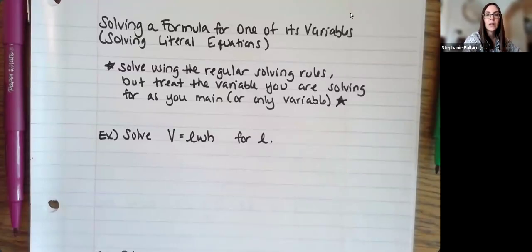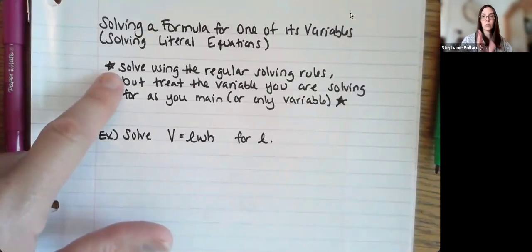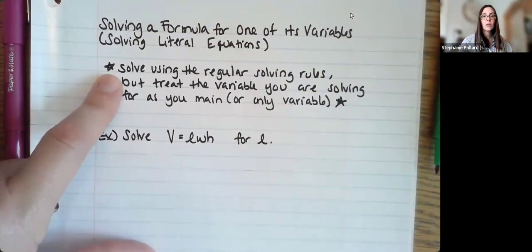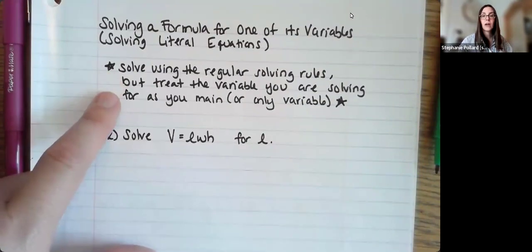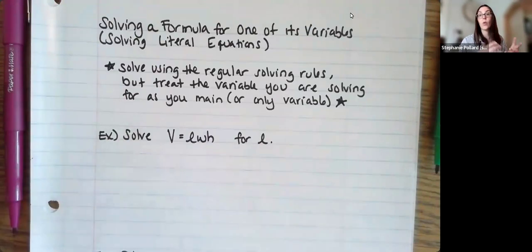Hi, everybody. In this video, I want to show you how to solve a formula for one of its variables. This is sometimes also called solving literal equations, so it means the same thing. But basically, many formulas have more than one variable in them, and it's helpful if we're able to rearrange those formulas and solve for different variables. So that's what we're going to do here. We're going to use our same exact solving rules like we would for any other equation. So there's nothing new there. The only thing is you treat the variable you're solving for as sort of your main variable or your only variable. You kind of pretend everything else is just a number and solve for just the one variable you're looking for. So let me show you a few examples.